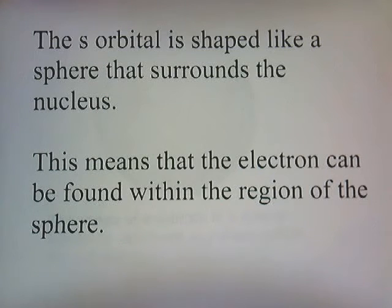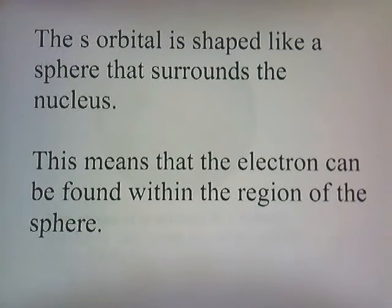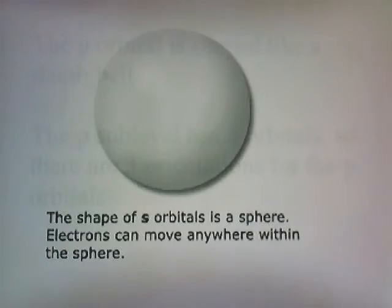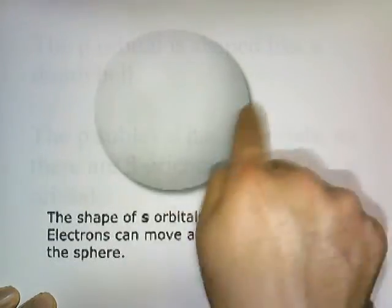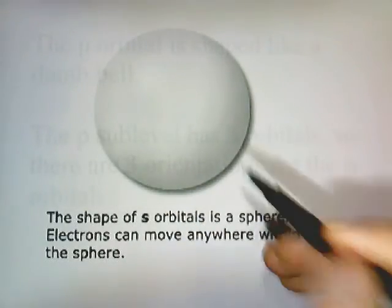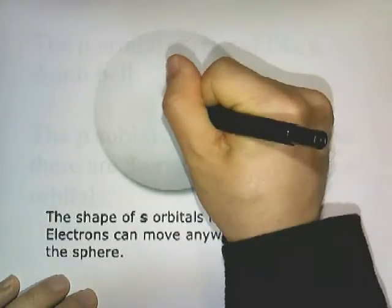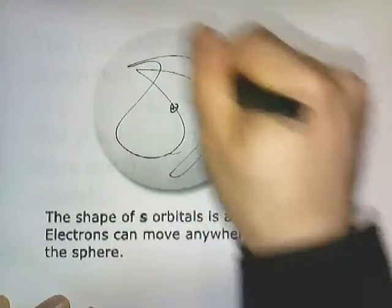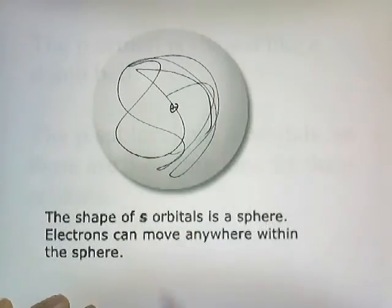The S orbital is shaped like a sphere that surrounds the nucleus. This means that the electron can be found within the region of the sphere. So the S orbital is a sphere, and the electrons are just moving within the sphere — in the middle of the sphere is the nucleus of the atom. The electron is just randomly moving around in this spherical region.